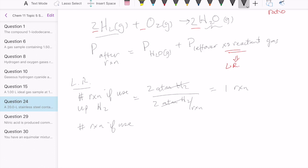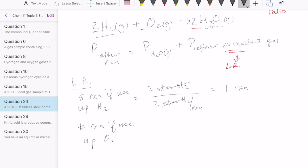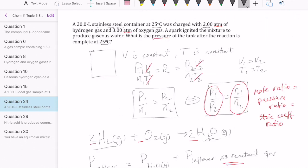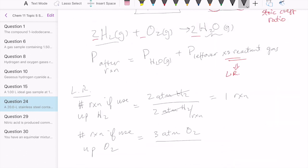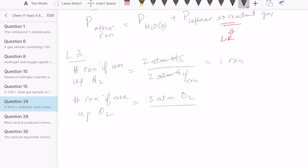Let's see what happens if we use up all oxygen. Oxygen quantity at the beginning was three atm. In the equation, we were told that we need one atm of oxygen per reaction. So that means that we're going to get three reactions if we use up all our oxygen. Since that one gives us fewer reaction, that's our limiting reactant. Okay, it's H2.